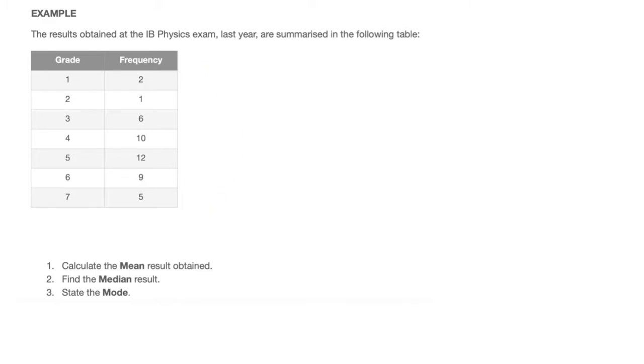In this example, the results obtained at the IB Physics exam last year are summarized in the following table. We need to do three things. First, calculate the mean result obtained. Secondly, find the median result. And finally, state the mode.